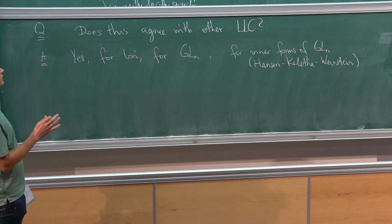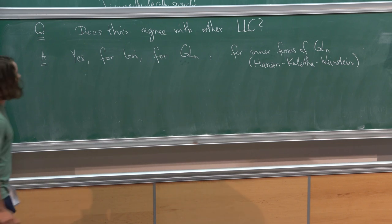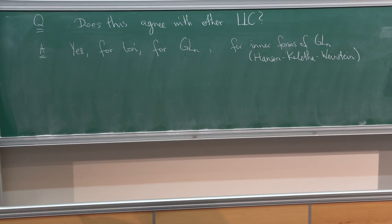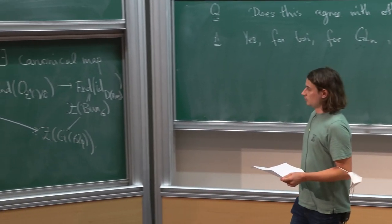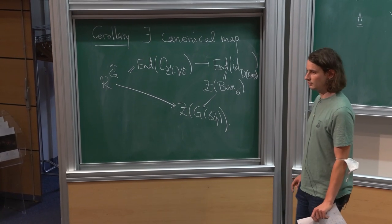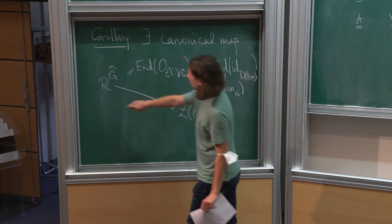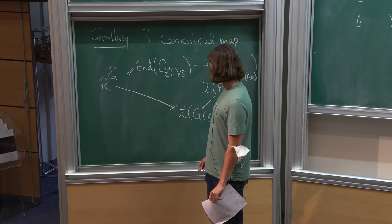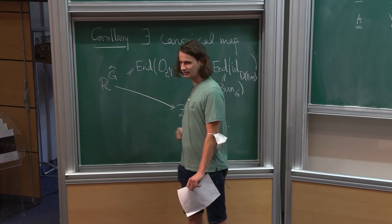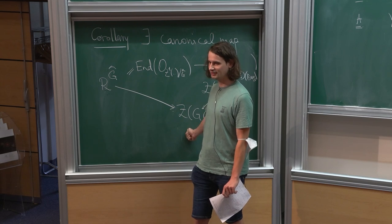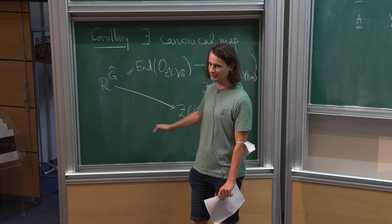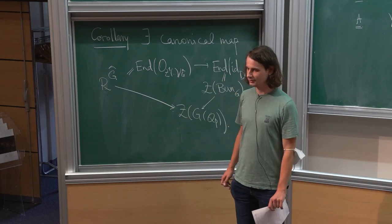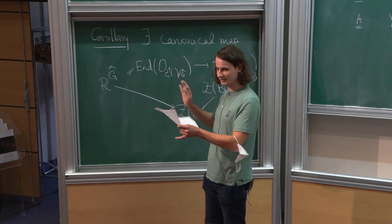There are some other isolated cases — for GSp4 Linus Hamann has proved something — but in general it still seems like an open problem. It's even open whether it agrees with the construction of Genestier-Lafforgue in the function field case, where their construction is of an extremely similar nature. For GL_N, this implies the map RG-hat to the Bernstein center is an isomorphism over Z_L, which Helm and Moss proved. One main input is the existence of the map, supplied by our argument; whether you can simplify after having the map is not a completely formal argument.